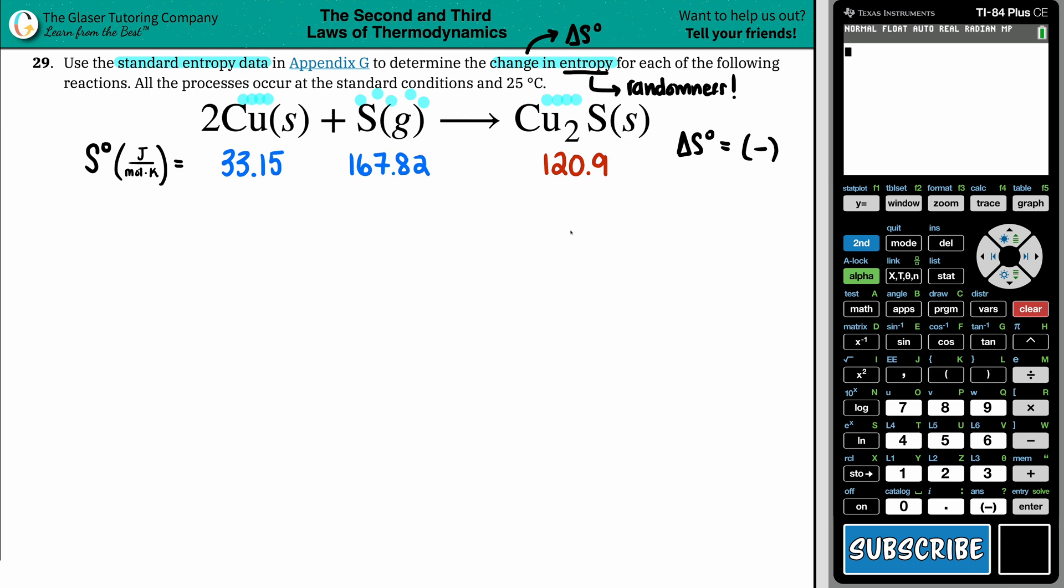Now what formula are we going to use with these values? Well, it's pretty simple. It's this formula right here. Delta S for the whole entire reaction, Rxn means reaction, is always equal to the sum. We're going to sum up all the products and subtract from the sum of all your reactants. So it's essentially products minus reactants.